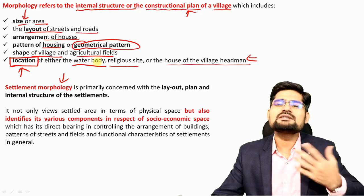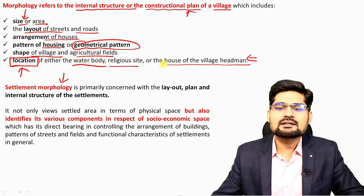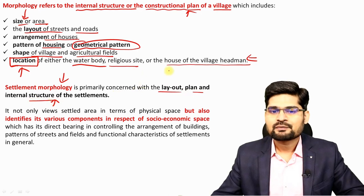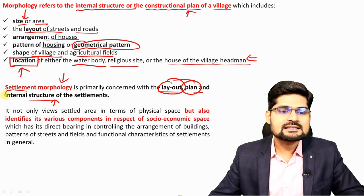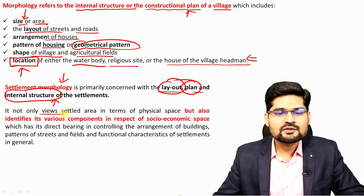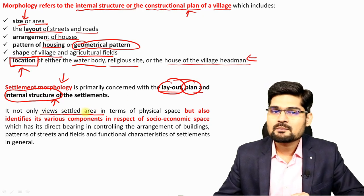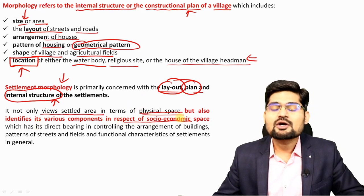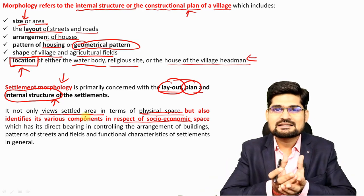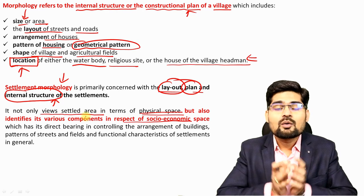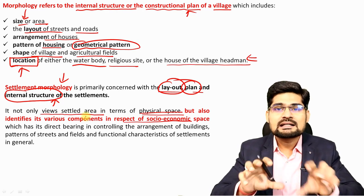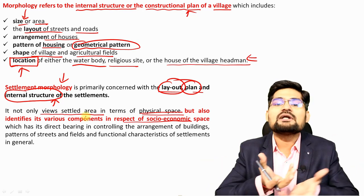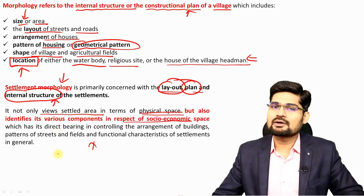Settlement morphology, or rural settlement morphology, is primarily concerned with the layout, plan, and internal structure of the settlements. It's not only about the physical space — the map or the location — but also equally important is the socio-economic component. How it segregates, disintegrates, or integrates all these factors in the development of a settlement pattern makes socio-economic space as important as the physical space.